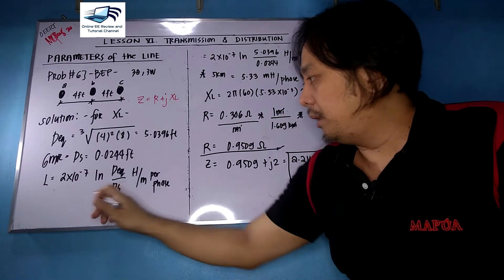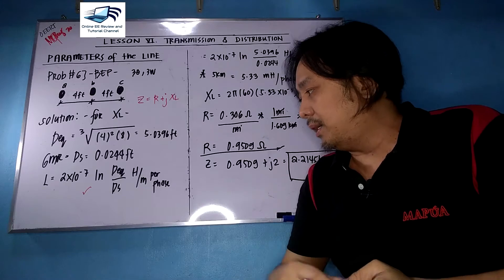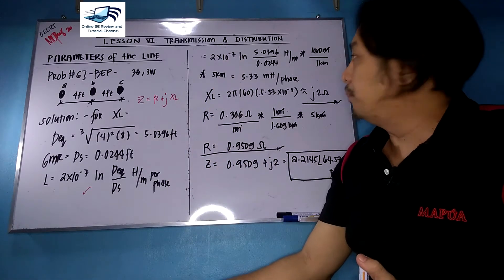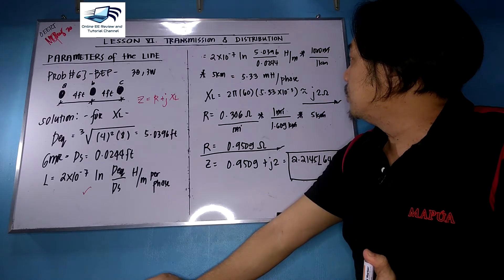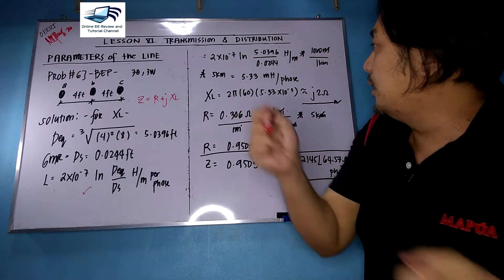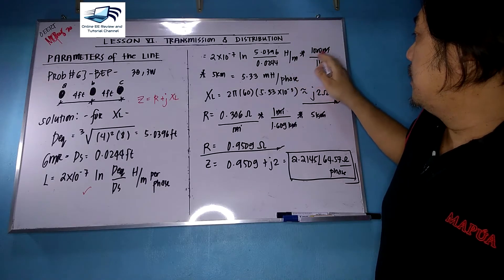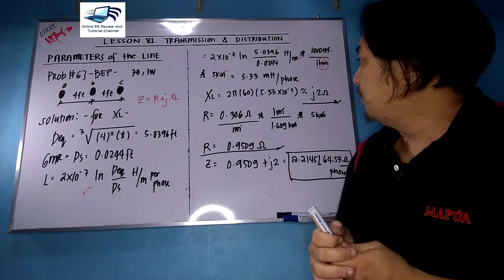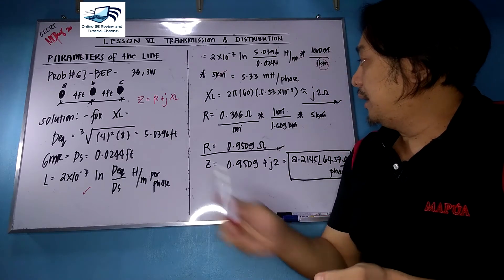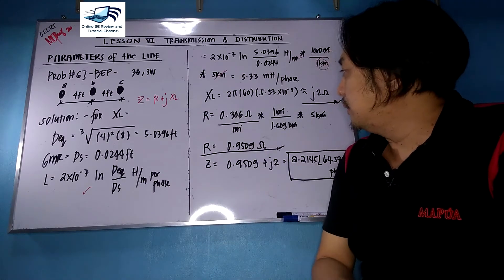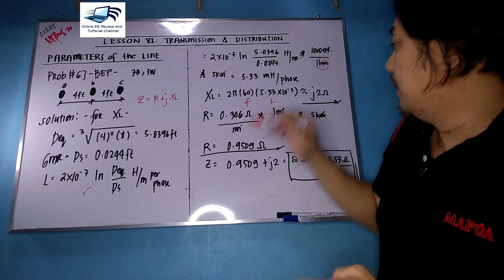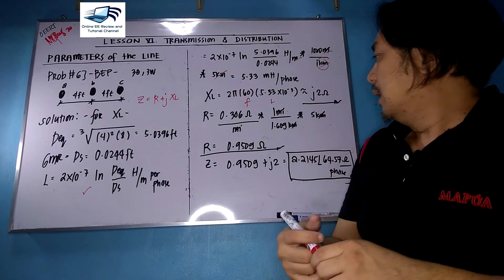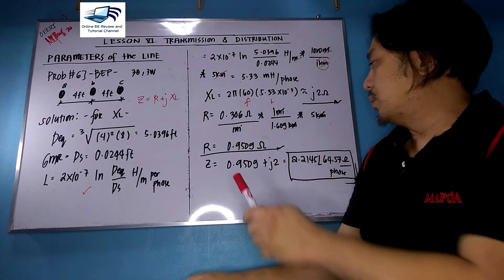Substituting into the formula: L equals 2 times 10⁻⁷ times ln(5.0396 over 0.0244), in henry per meter per phase. We then cancel the meter unit, convert to kilometers, and since the line is five kilometers long, the answer is 5.33 mH per phase. Getting X_L at 60 Hz: 2 pi times 60 times 5.33 times 10⁻³ gives j2 ohms.